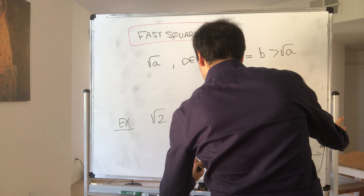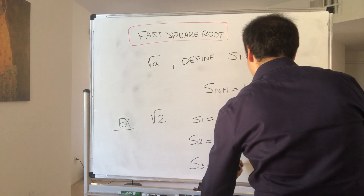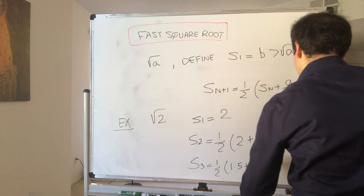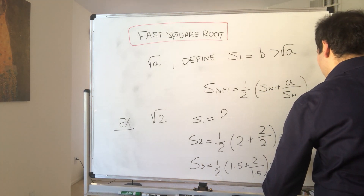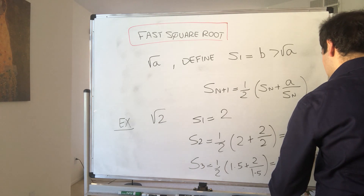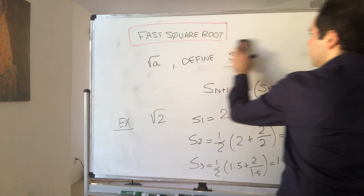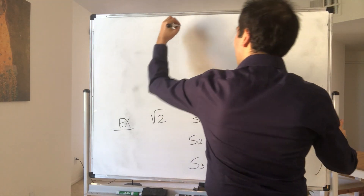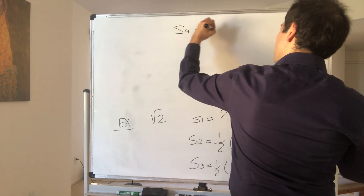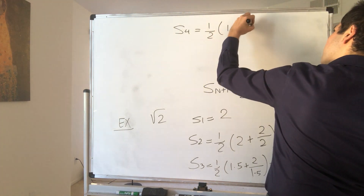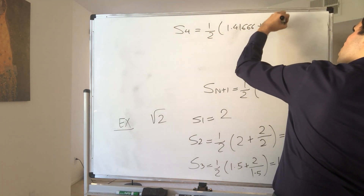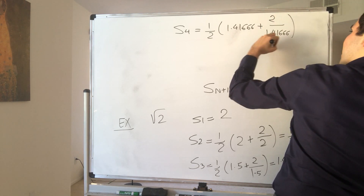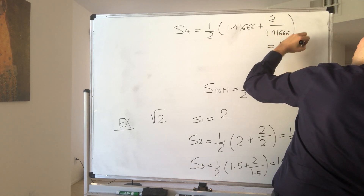Then s_3 becomes the average of 1.5 and 2 over 1.5, and I believe that becomes 1.41666. And then s_4 becomes one-half times 1.41666 plus 2 over 1.41666, and that becomes 1.4142.